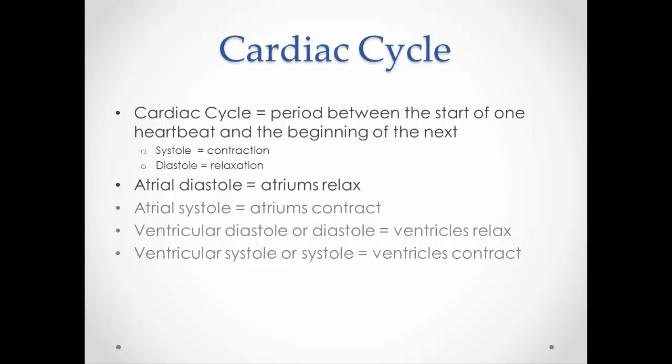Atrial diastole means the atriums are relaxed; atrial systole means the atriums are contracting. Ventricular diastole means the ventricles are relaxed, and ventricular systole means the ventricles are contracting. When we use the terms diastole and systole by themselves, that indicates just what the ventricles are doing, since they are the more important chambers for moving blood and affecting blood pressure. So systole alone means the ventricles are contracting, and diastole alone means the ventricles are relaxed.